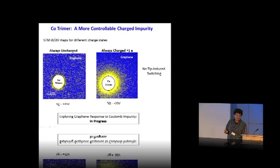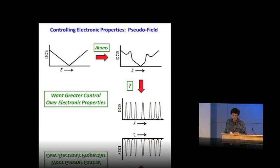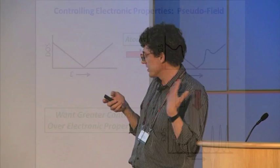Putting atoms down onto graphene is one way to change its properties, but you might want to change it in different ways — for example, you might want to induce an energy gap or quantize energy levels. One way to do that is to turn on a magnetic field. A magnetic field causes electrons to go around in circles, and when you quantize that circular motion, you get Landau levels. The degeneracy and energy spacing between the Landau levels depends on the strength of that magnetic field.